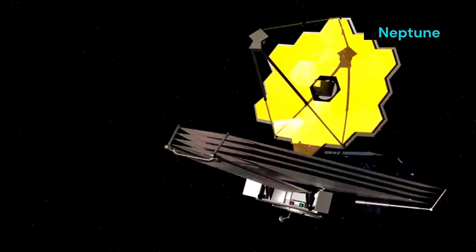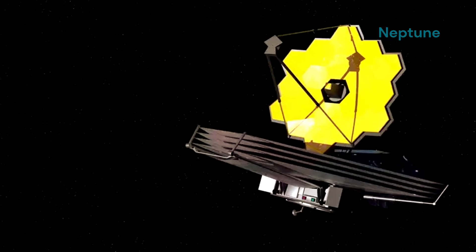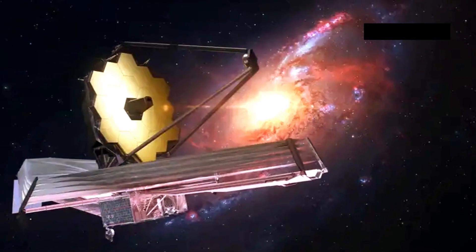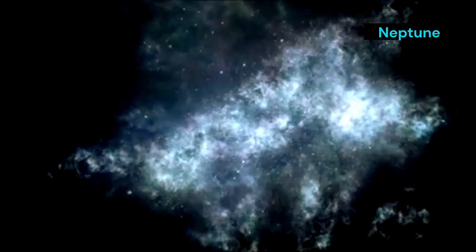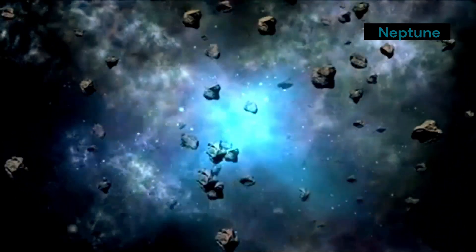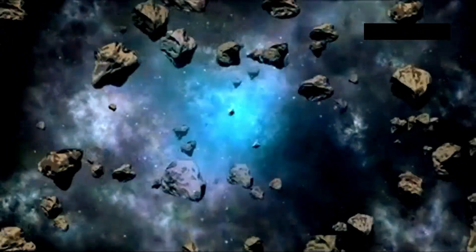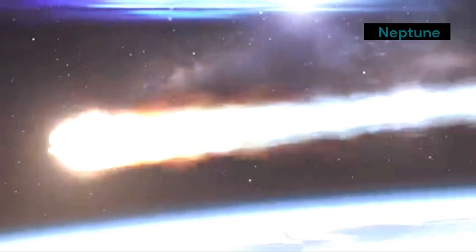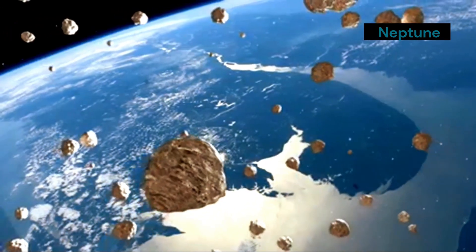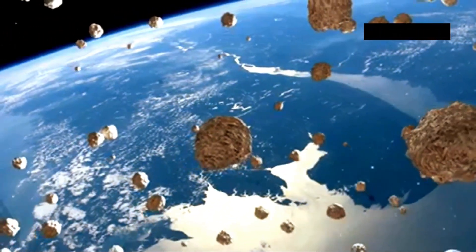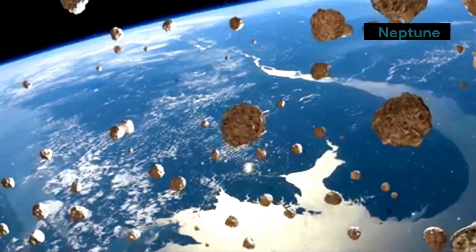The impact's ripple effects. The collision on Neptune is not just a local event. It has ripple effects that extend throughout the solar system. The impact has released a cloud of debris. This debris will spread out over time. Some of this debris may eventually reach Earth. However, there is no need to worry. The amount of debris that reaches Earth will be tiny. It will pose no threat to our planet.